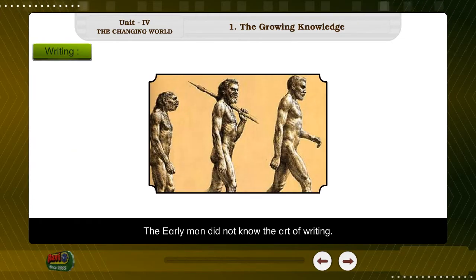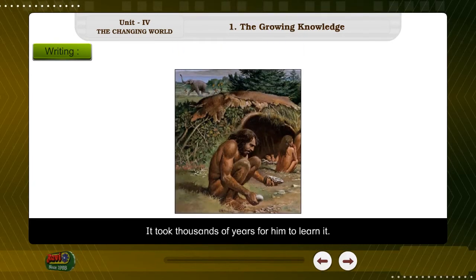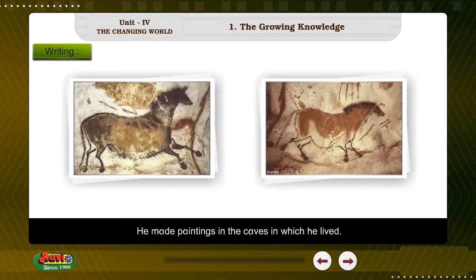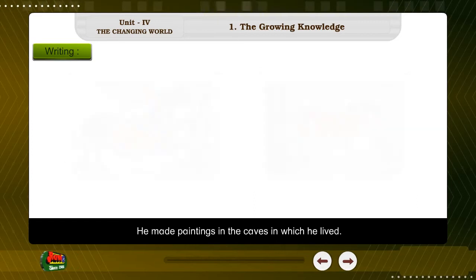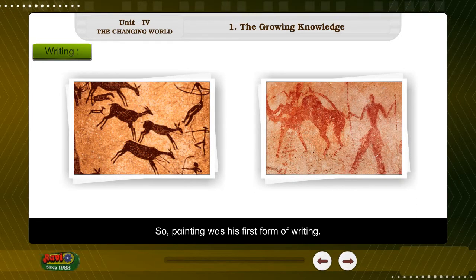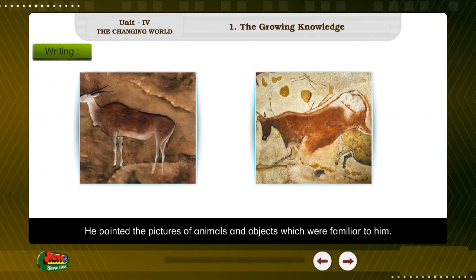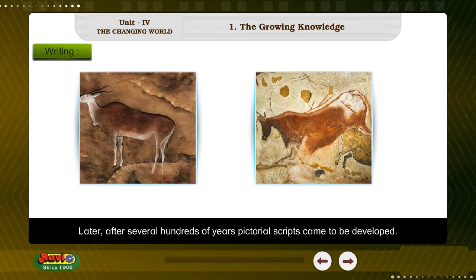The early man did not know the art of writing. It took thousands of years for him to learn it. He made paintings in the caves in which he lived, so painting was his first form of writing. He painted pictures of animals and objects which were familiar to him. Later, after several hundreds of years, pictorial scripts came to be developed.